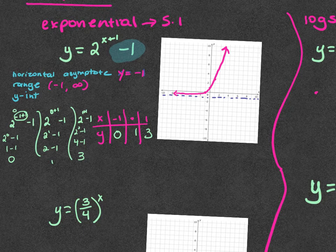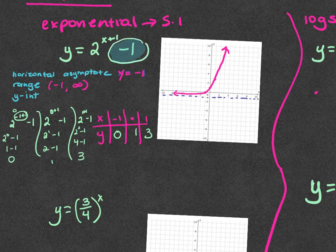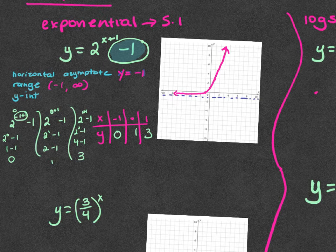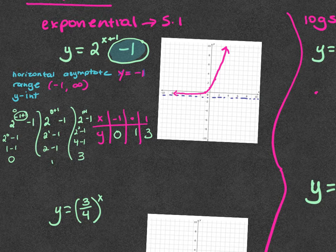The y-intercept: the asymptote comes from your vertical shift on the exponential function. If there's no shift — nothing added or subtracted after the exponent — the horizontal asymptote is at zero. If it's minus, it shifts down, so y equals whatever that vertical shift value is. Because of that negative one, everything got shifted down to negative one.